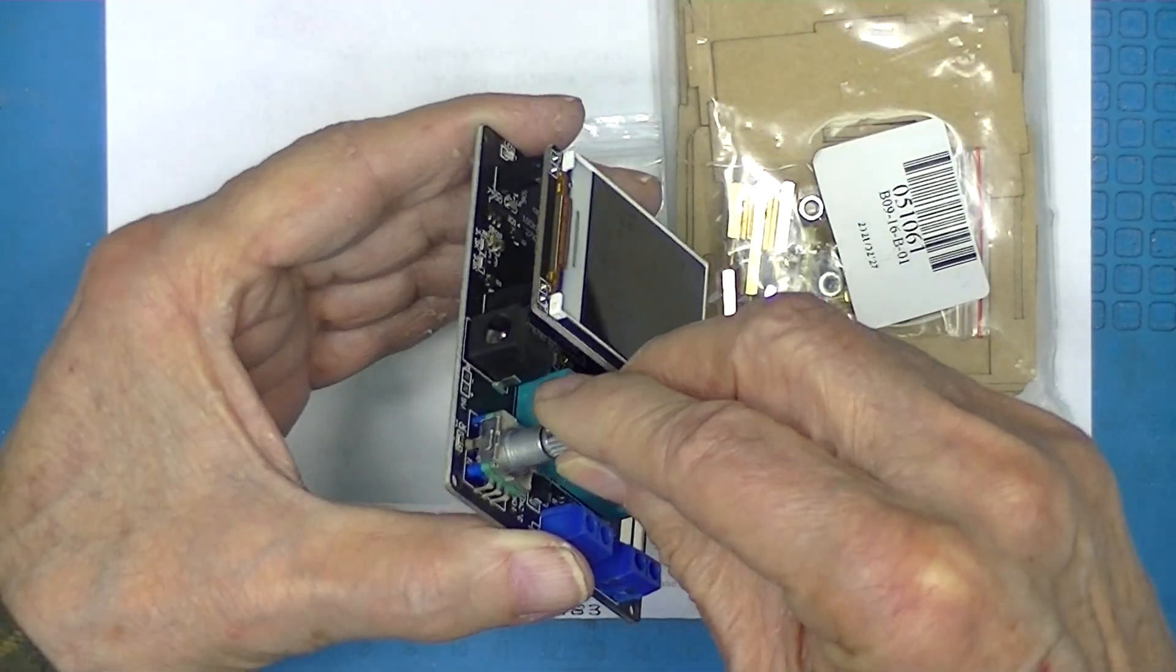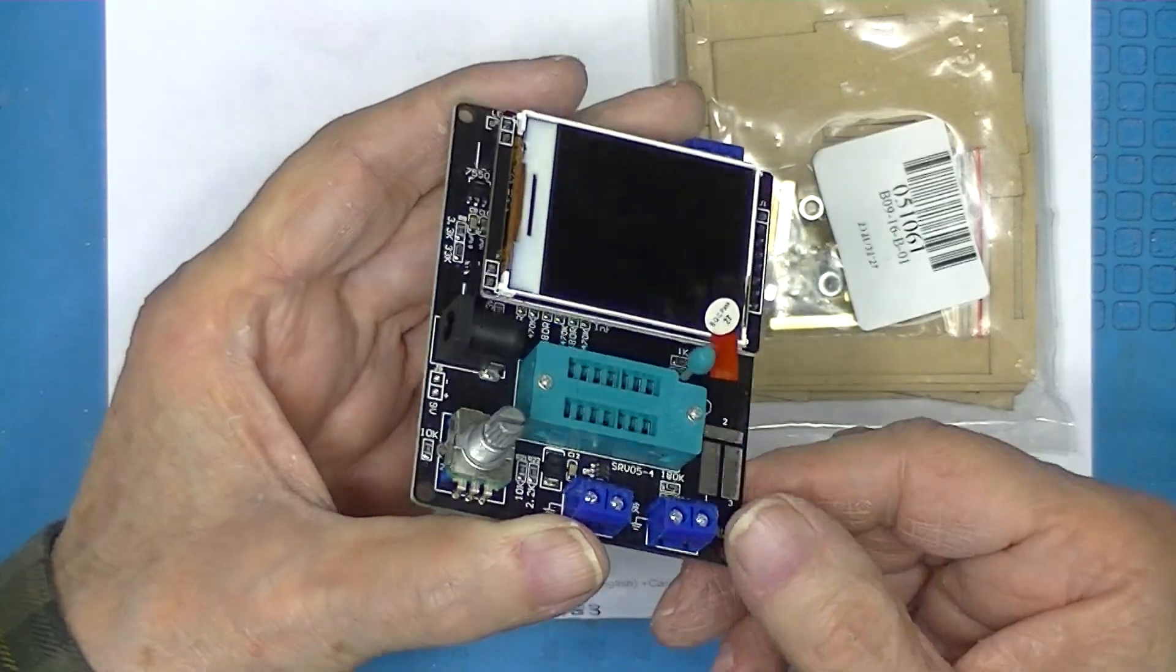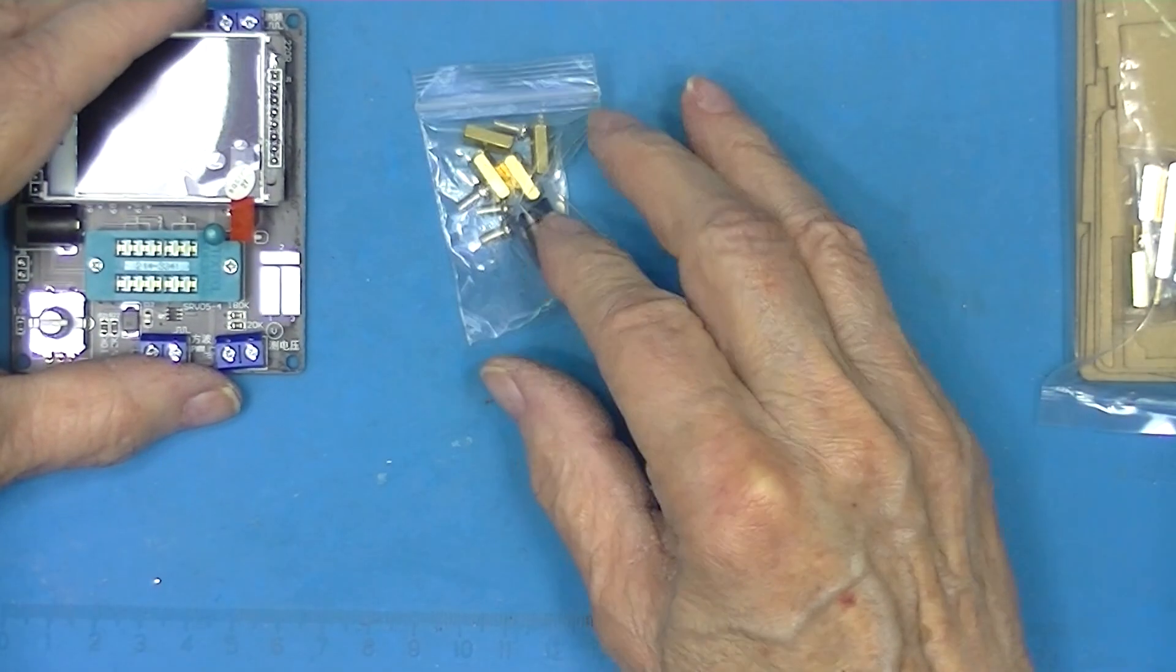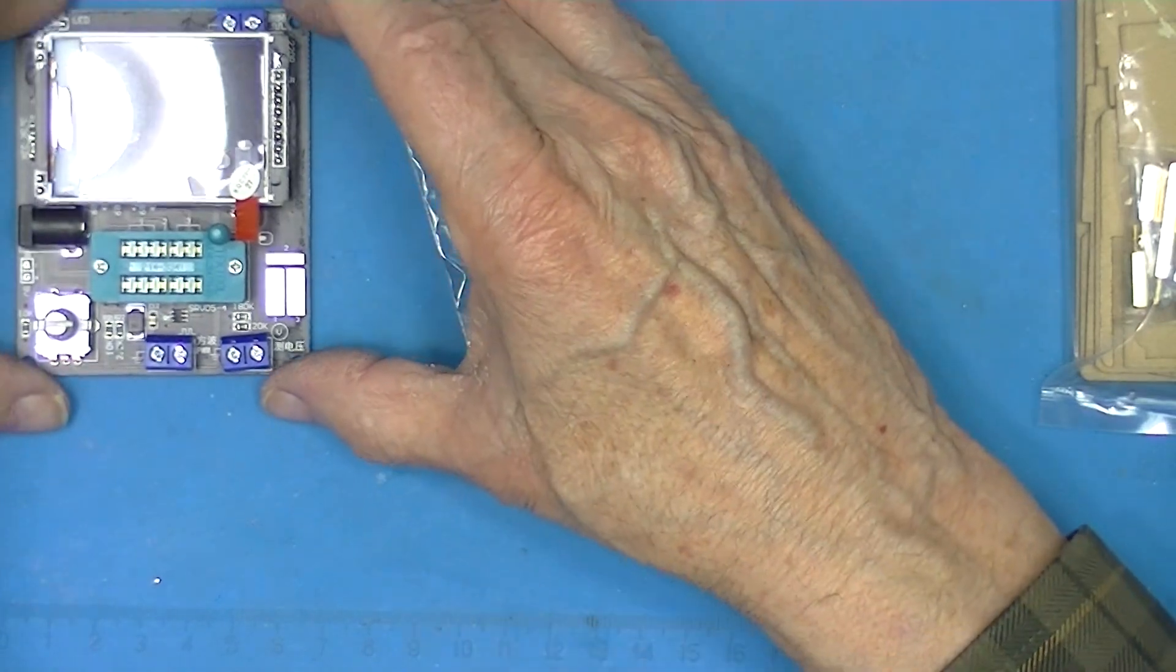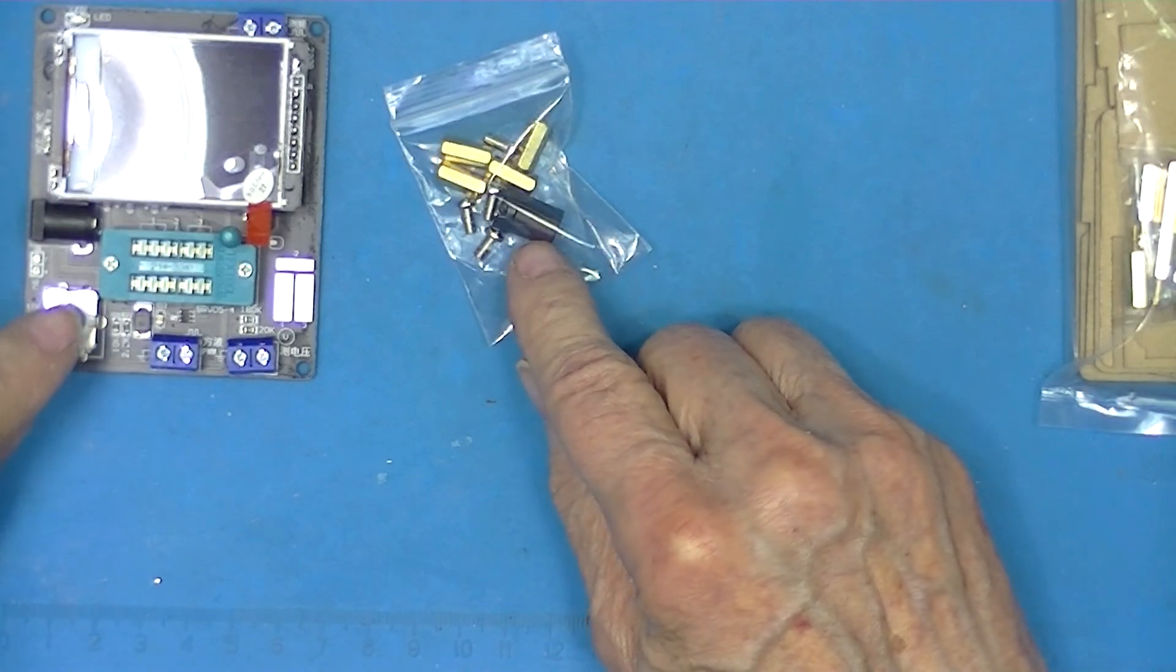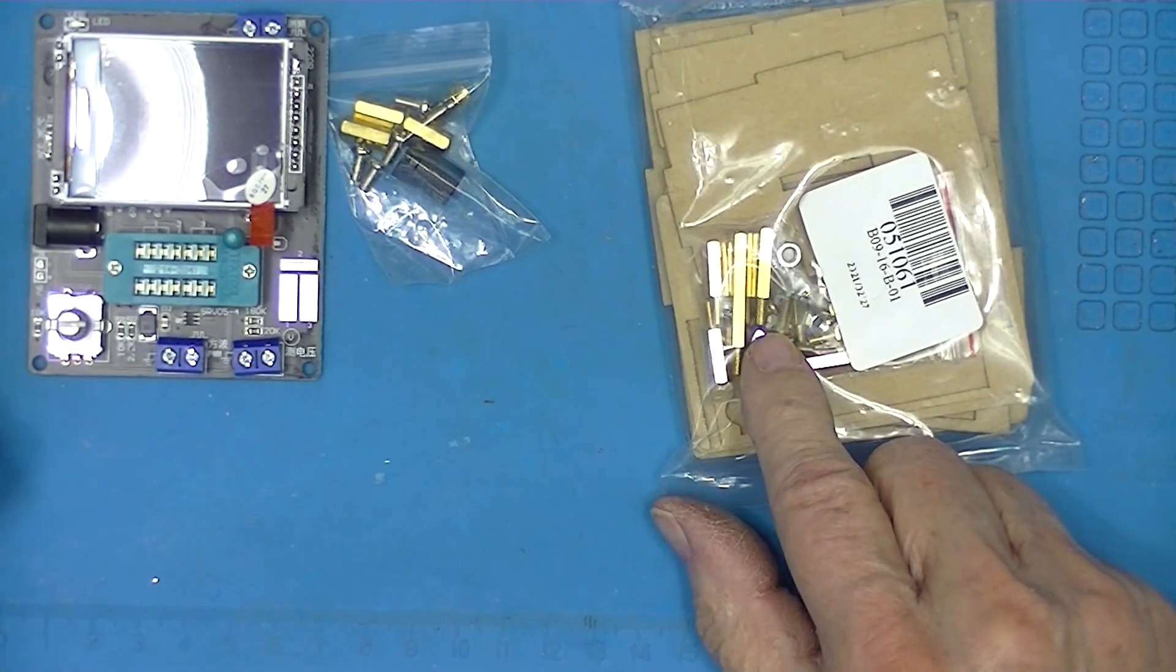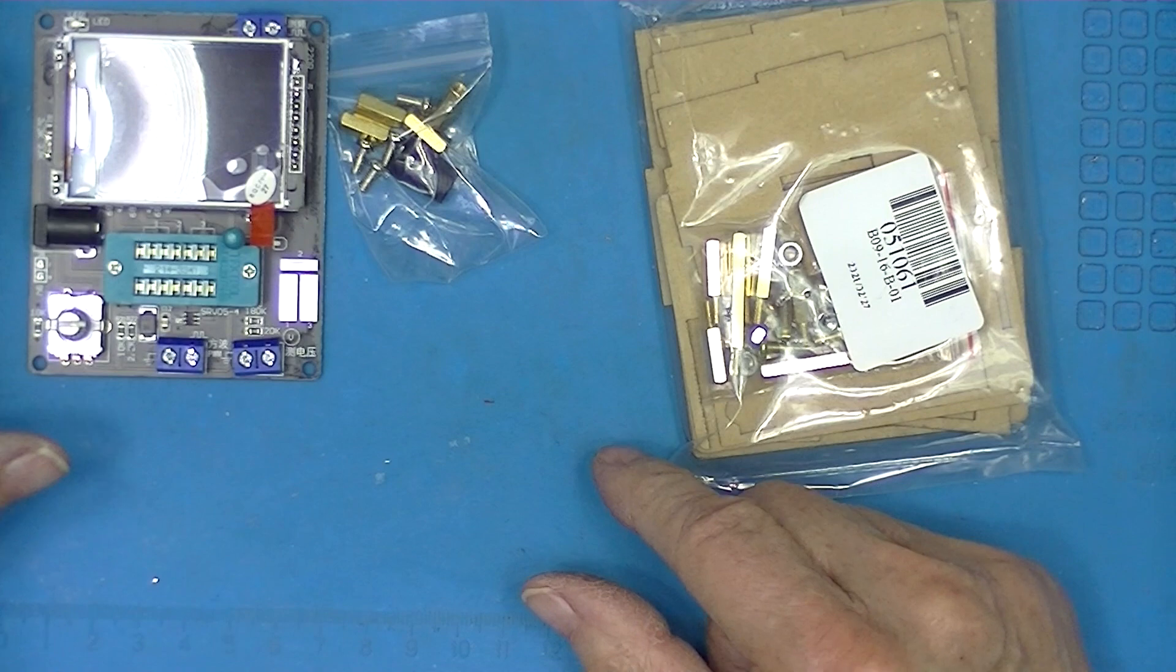It has a rotary encoder with a push button. It does come with four standoffs that are normally just used as feet and a knob for the encoder. There are some additional standoffs here that may or may not replace these standoffs.